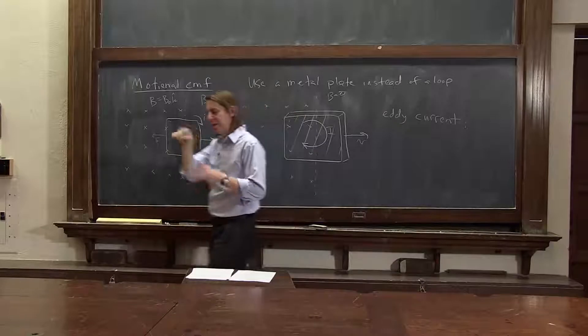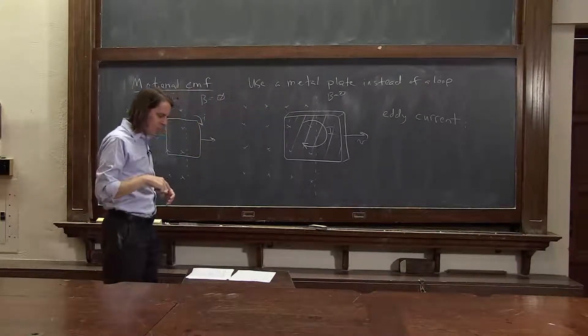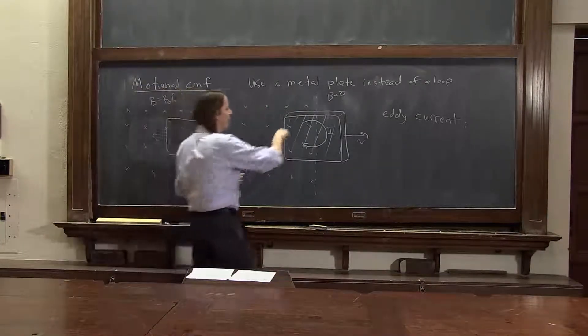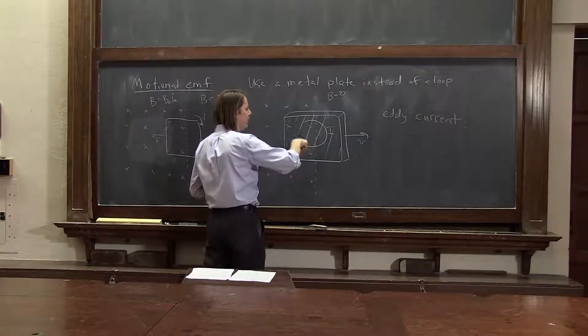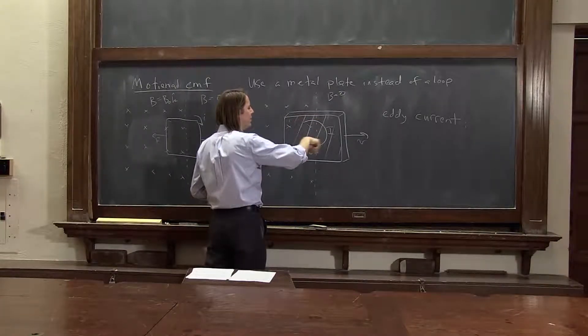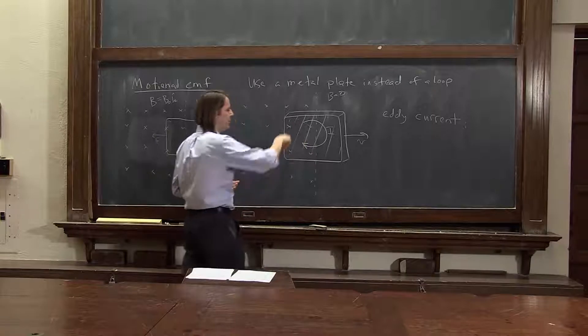It's called an eddy current, because like in water, an eddy current is usually a little swirling current. And that's what happens. There's no specific path of a wire loop to define the flow of charge, or the flow of the current in a circle.